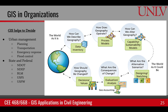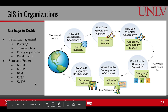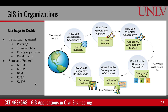GIS also appears at state and federal levels. A few examples include the Nevada Department of Transportation, Nevada Division of Environmental Protection, Bureau of Land Management, U.S. Forest Service, and U.S. Fish and Wildlife Service. All of these organizations, and many others in the U.S. and around the world, are using GIS.